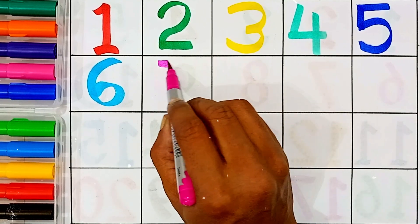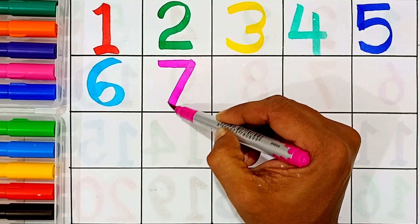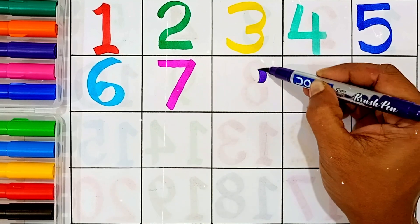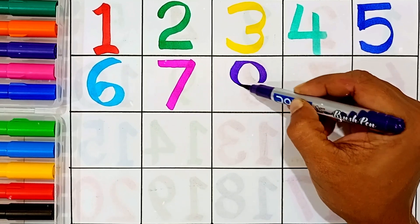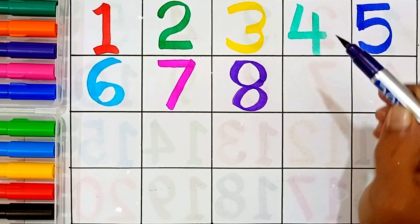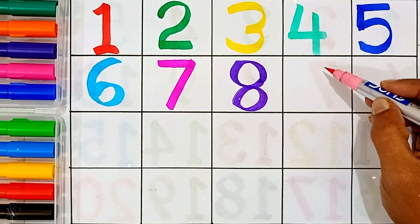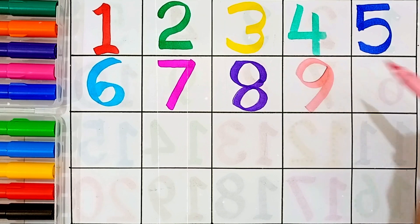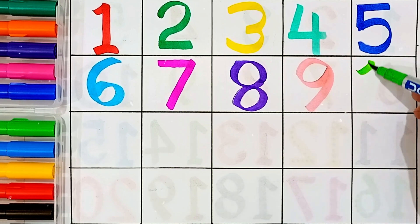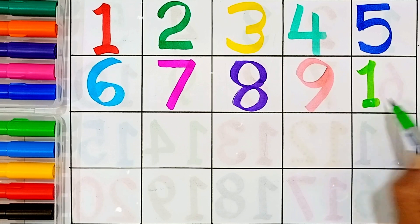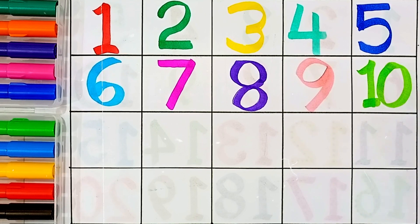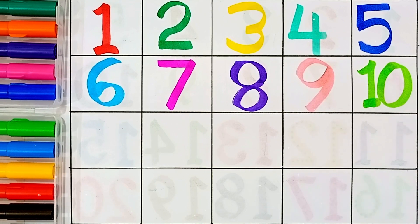7 — this number name is 7. 8 — this number name is 8. 9 — this number name is 9. 10 — this number name is 10, 1 and 0.